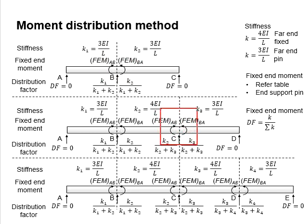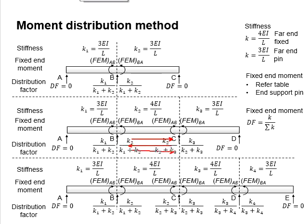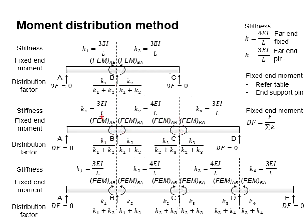Should the other end also have differences between the fixed-end moments on different sides, the additional moment will again be transferred back to the other joint. This process of stress being carried over will be continuously repeated until the fixed-end moment at each support becomes stable, meaning the internal stresses counteract each other.